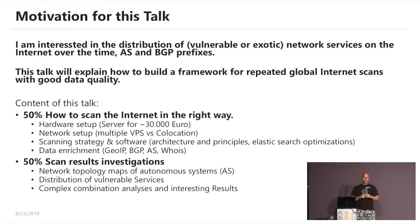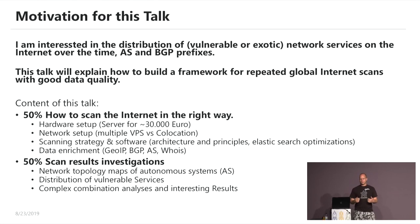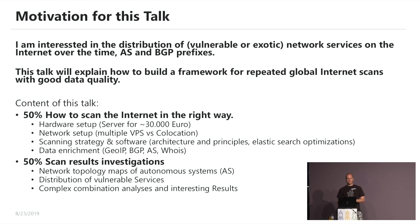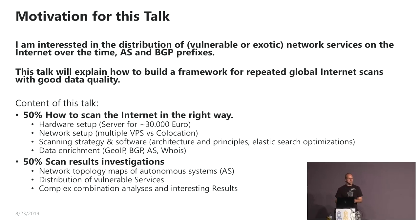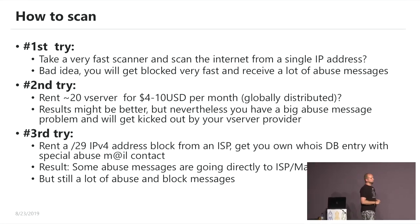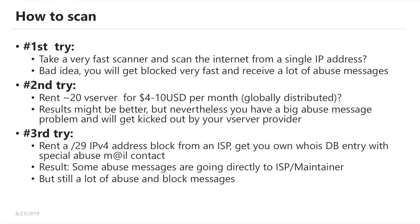This talk is about how to set up an infrastructure for long-term repeated scans. I'm interested in the distribution of vulnerable or exotic network services — like industrial control systems or building management systems — over time across different autonomous systems or BGP prefixes. The first try was like everyone probably does: take a fast scanner and run it from a single source IP. But that's a really bad idea. You get blocked immediately, receive a lot of abuse messages, and your VPS provider will kill your service.